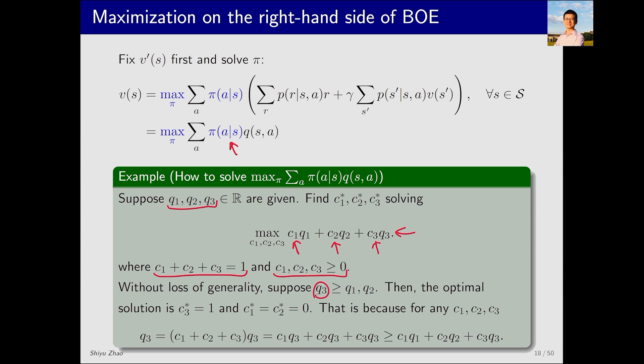Q3 is the largest. It is totally alright to assume that Q1 or Q2 is the largest. If Q3 is the largest, the optimal solution would be C3 equals 1, while C1 and C2 equal 0. Why? There are two ways to explain. Intuitively, C3 represents the weight of Q3. Since Q3 is the maximum, we want to allocate all weight to Q3, naturally making C3 equal to 1 to maximize the overall sum.